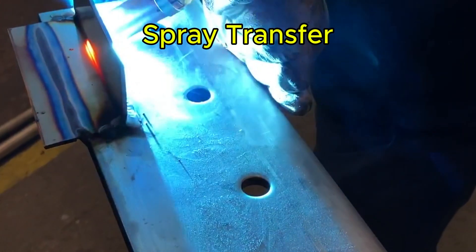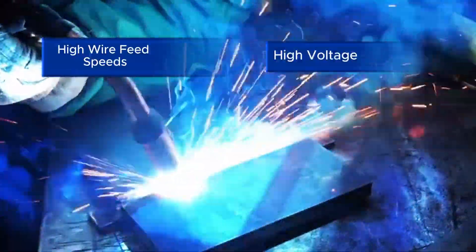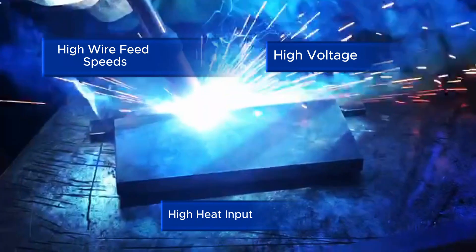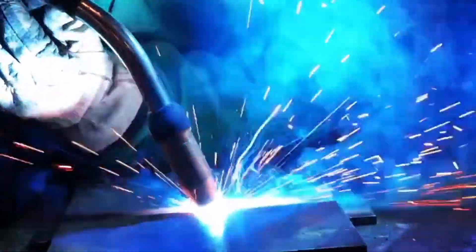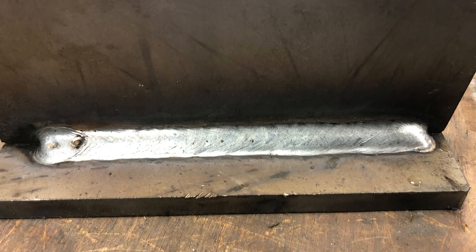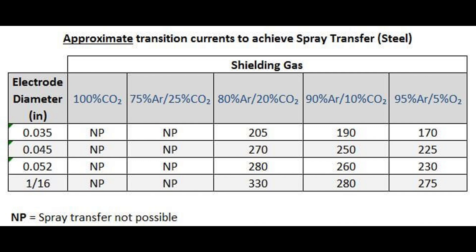Now let's talk about spray transfer, a highly efficient mode where fine droplets of metal are projected axially from the electrode tip to the work. These droplets are smaller than the electrode itself. Spray transfer is characterized by high wire feed speeds, high voltage, and consequently high heat input. It creates a very fluid weld puddle, which limits its use to flat and horizontal positions. To achieve spray transfer, you need amperage above a specific transition current and the corresponding voltage for a stable arc. The shielding gas requires at least 80% argon, with the balance being mostly carbon dioxide or sometimes oxygen at 5% or less.